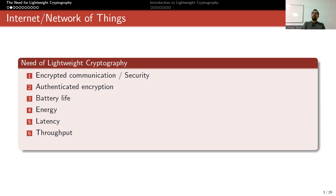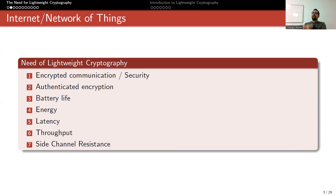Sometimes in lightweight cryptography for IoT we don't need much throughput, but if it is too low you wouldn't like it. Finally, side channel resistance — this is one of the most important things. Although an algorithm might be secure, its implementation may not be. In side channel attacks we don't break the algorithm, we break the implementation — based on power consumption, noise, data leakage, and so on.